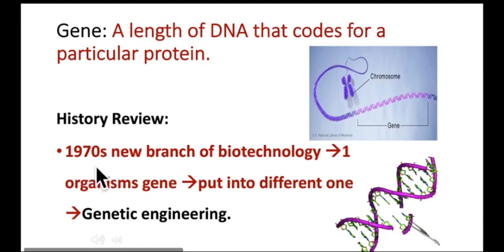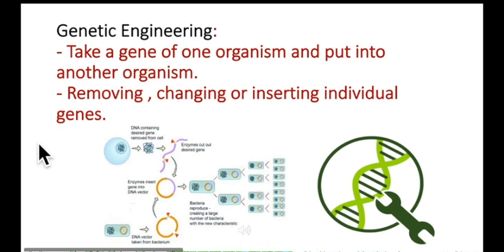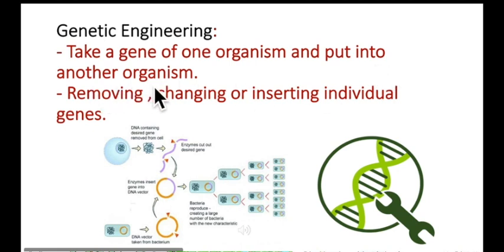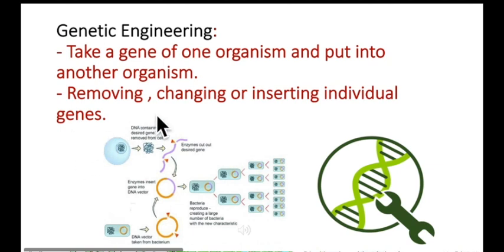Genetic engineering was first carried out in the 1970s, and since then many different uses have been found for this process. Genetic engineering is defined as taking a gene of one organism and putting it into another organism — in other words, changing the genetic material of one organism by removing, changing, or inserting individual genes. The diagram shows how the process of genetic engineering is carried out.